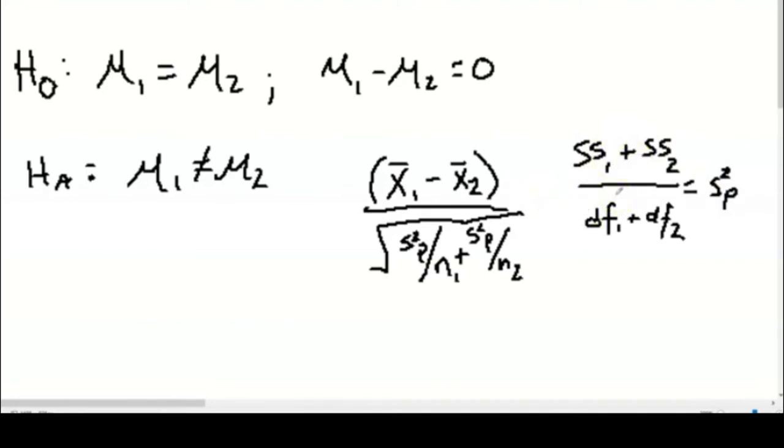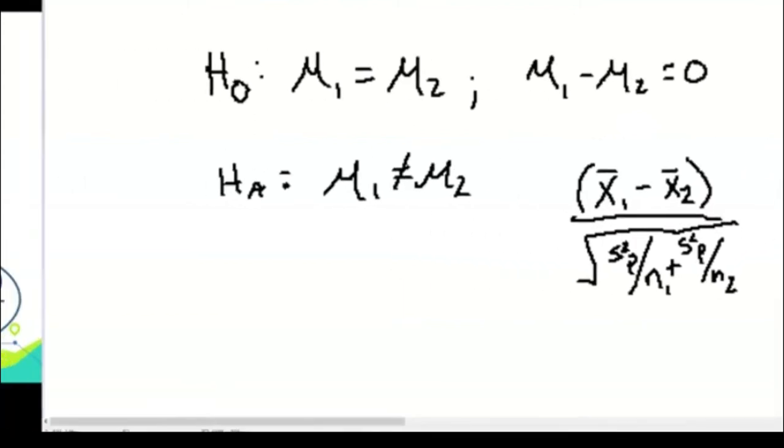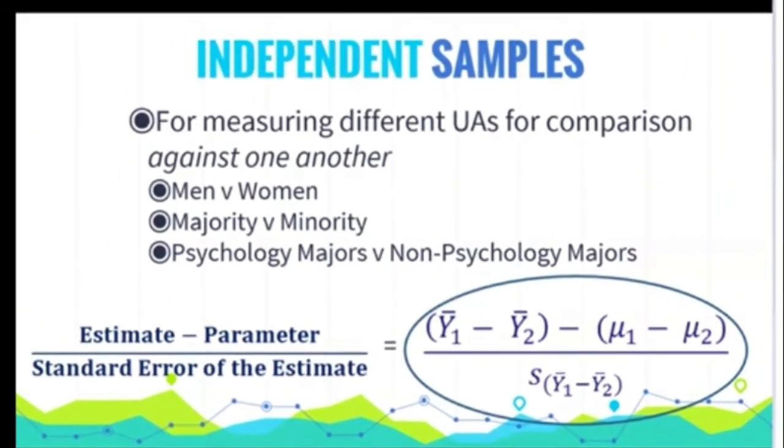So we'll look a little more at this math coming up, but this is the case where you would want to compare, for example, two classrooms, one teacher's group of students versus another teacher's group of students. So you would now have two independent samples.